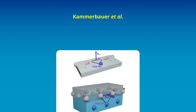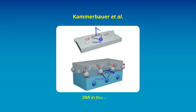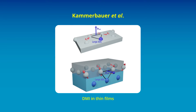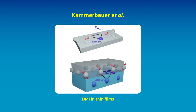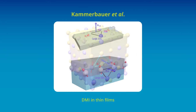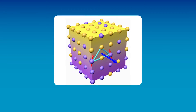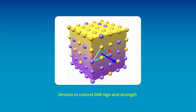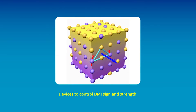Kammerbauer et al. discuss how DMI that emerges in various systems can be manipulated using electrical fields and currents. This may pave the way for the development of new devices based on the capacity to control DMI sign and strength.